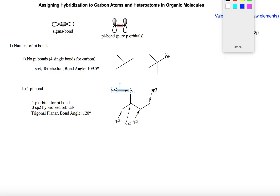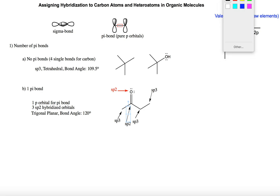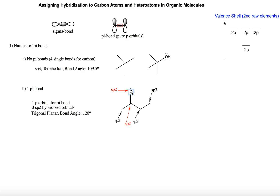The criterion to assign SP2 hybridization is simply to find one pi bond on the atom. Remember, when you have SP2 hybridized atoms, that atom has three SP2 hybrid orbitals and one pure p orbital for the pi bond. For example, this carbonyl oxygen is SP2 hybridized, meaning it has one pure p orbital for the pi bond and three SP2 hybrid orbitals. One SP2 orbital is used for the sigma bond, and the other two SP2 hybrid orbitals contain the lone pairs. Keep that in mind — it's very important for later understanding of resonance theory.